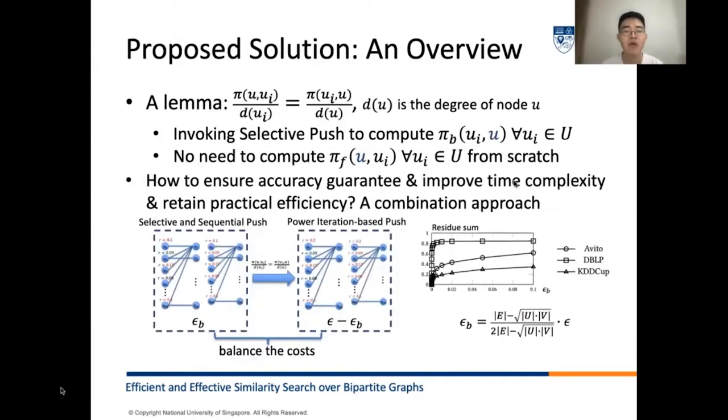Next, we present our proposed solution ApproxBHPP. It relies on a key lemma that pi(ui, u) over d_ui equals pi(u, ui) over d_u, where d_u and d_ui represent the degree of nodes u and ui respectively. This lemma suggests that if we can obtain HPP of source node u with respect to every node, we can obtain the HPP of every node with respect to the source node u. In other words, we do not need to invoke power iteration or Monte Carlo approach to compute the HPP of every node from the source node u from scratch.